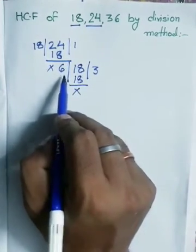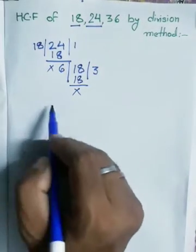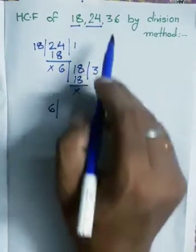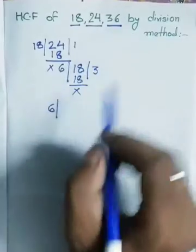Now write here 6. Now write down 36, this remaining number 36 here.